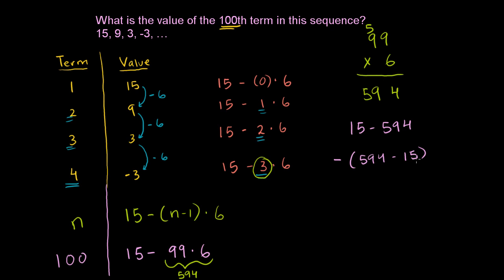This is much easier for my brain to understand. So what's 594 minus 15? We could do this in our head. 594 minus 14 would be 580, and then 580 minus one more would be 579. So that right there is 579. And then we have this negative sign sitting out there. So the 100th term in our sequence will be negative 579.